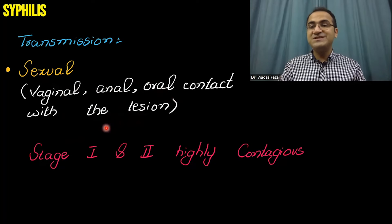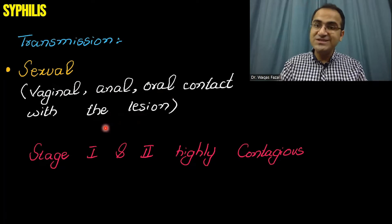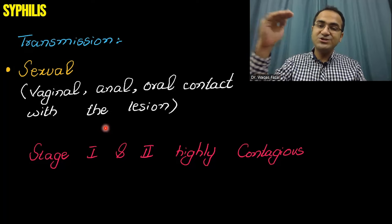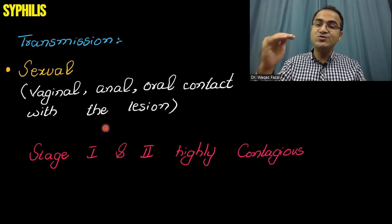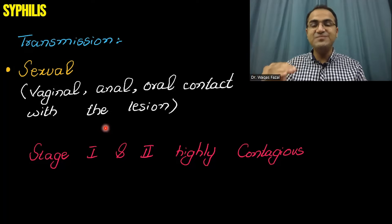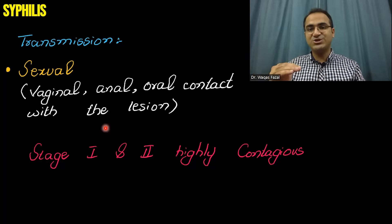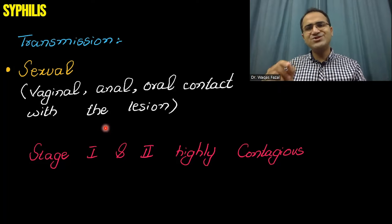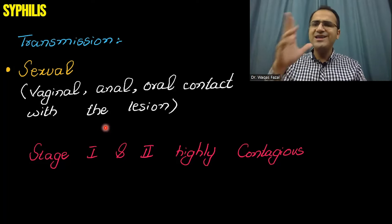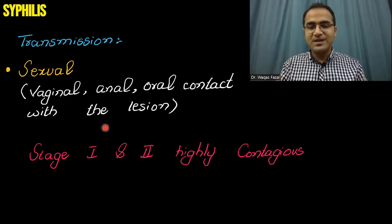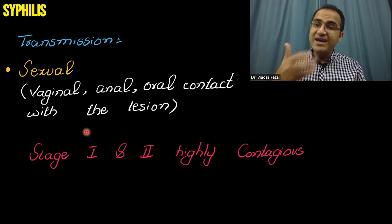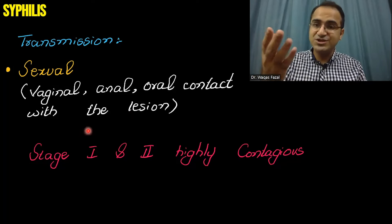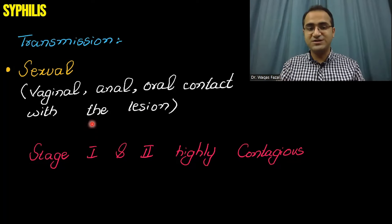Remember, syphilis presents in a few stages: Stage 1, the primary infection; Stage 2, the secondary infection; Stage 3, the tertiary infection. Stage 1 and Stage 2 are highly contagious — there is a high risk of transmission of infection to another person in these stages.